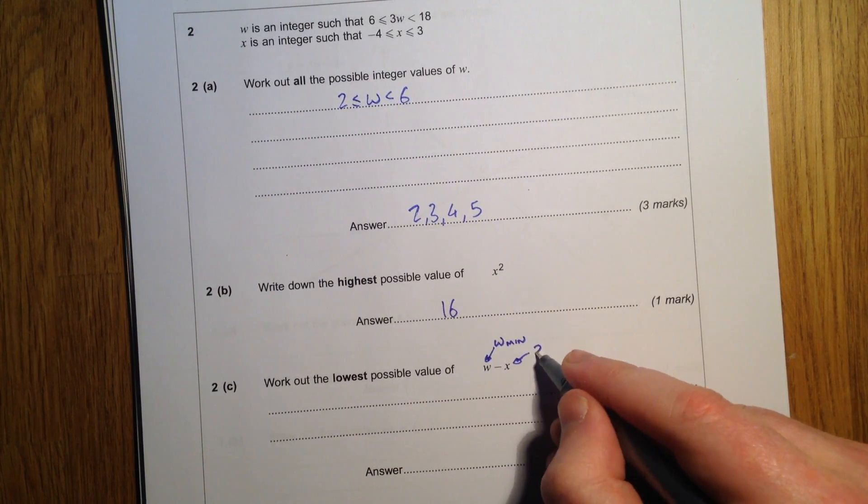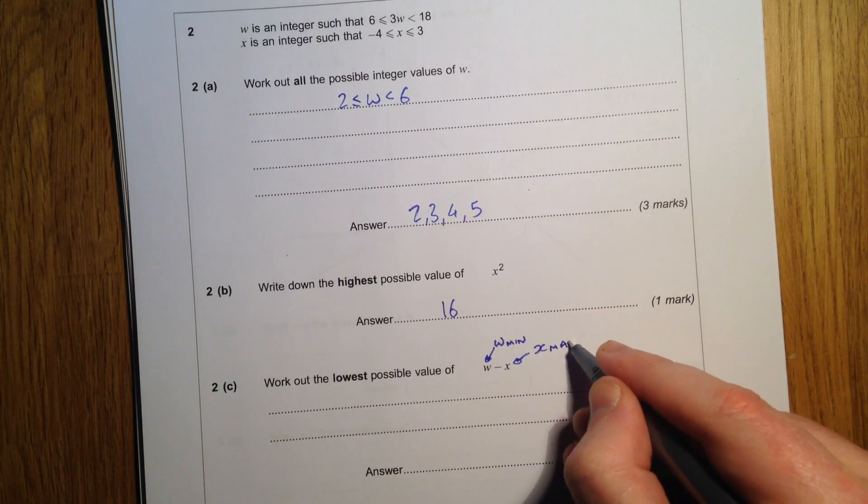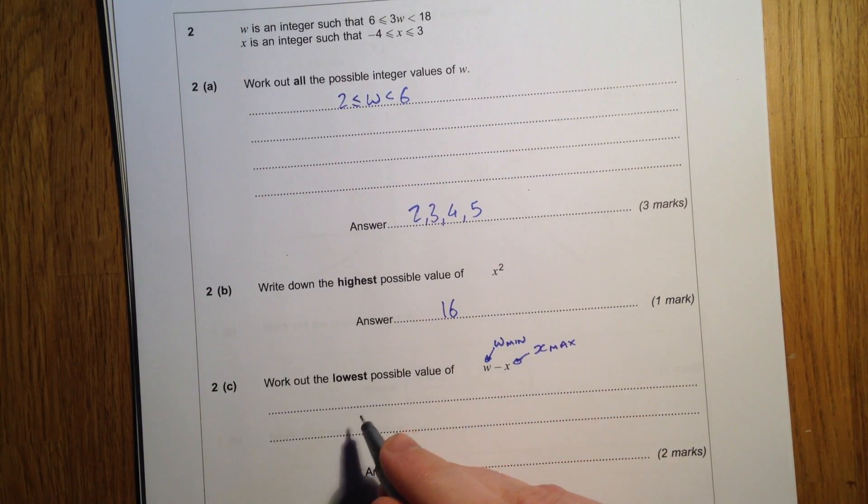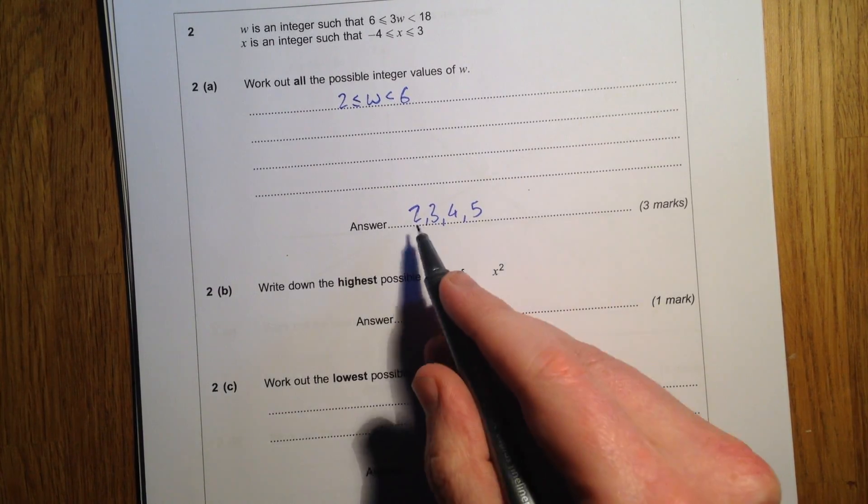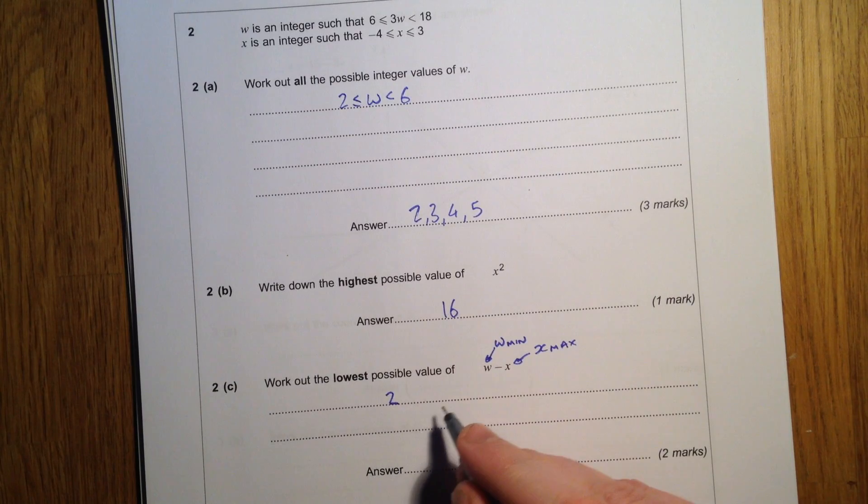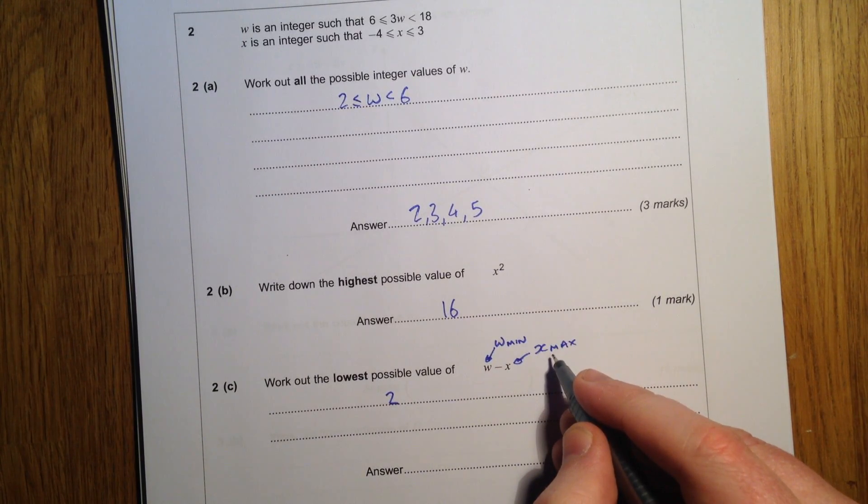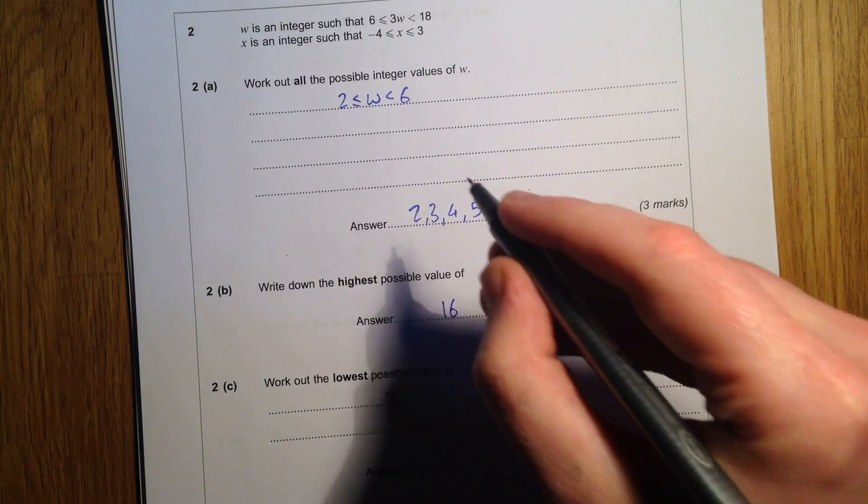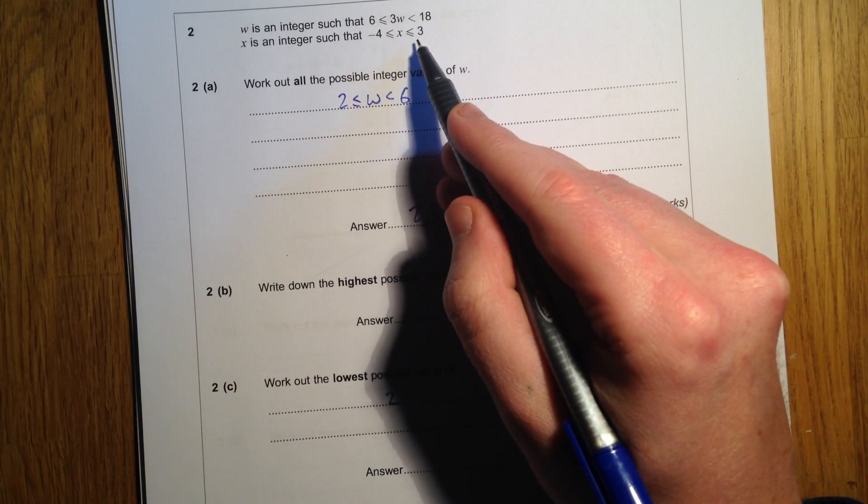And I want the maximum value of x. So the minimum value of w is 2, and the maximum value of x is going to be 3.